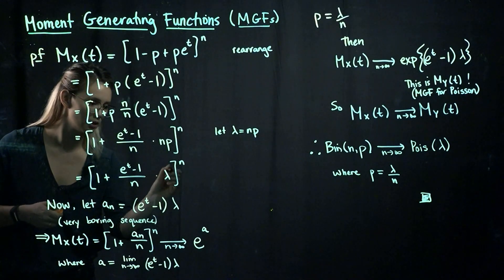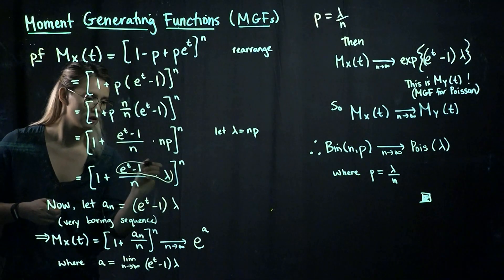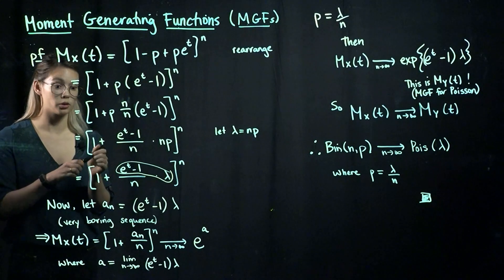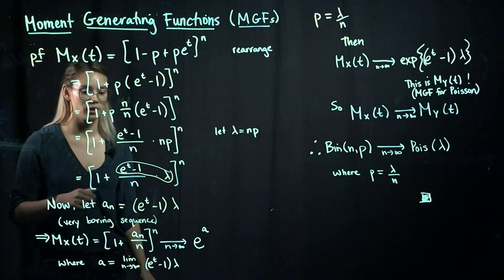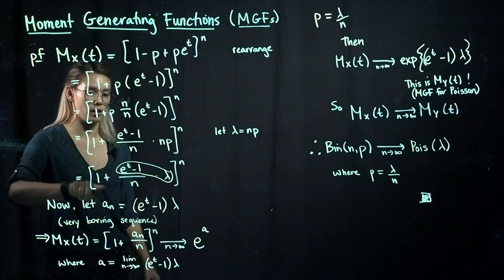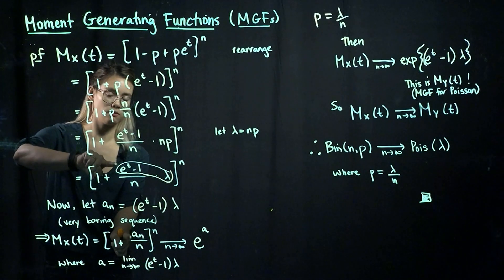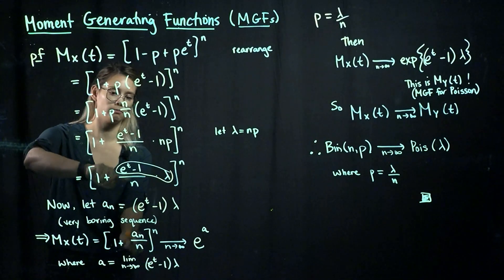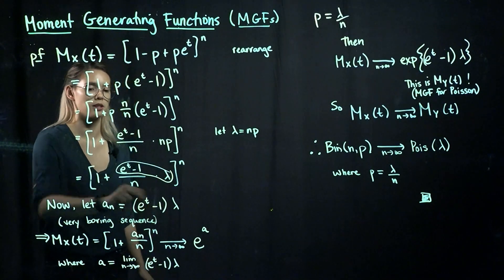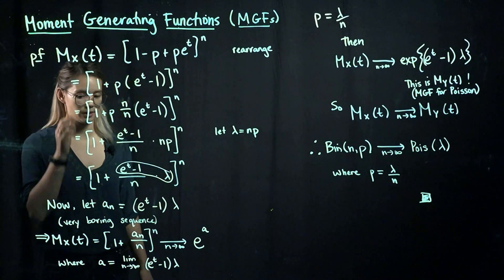So in other words, this stuff there. So the reason for that is that it will look like this: we'll have 1 plus something, that sequence, over n. So that's why we've chosen this to be our sequence, e to the t minus 1 times lambda.